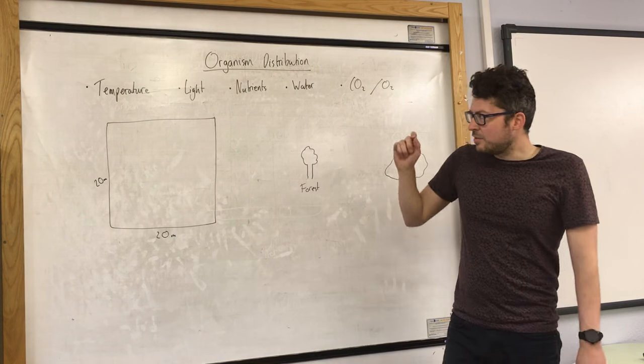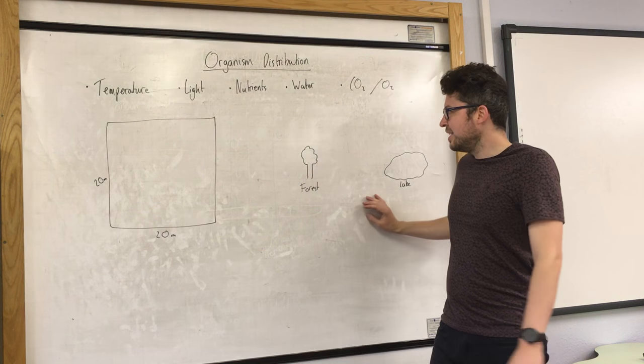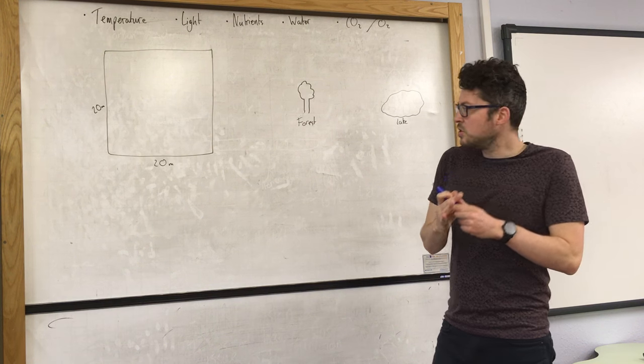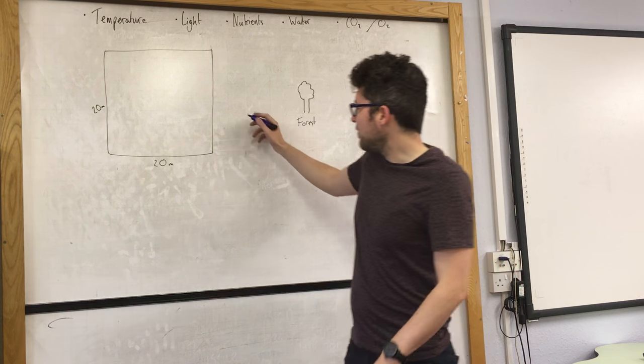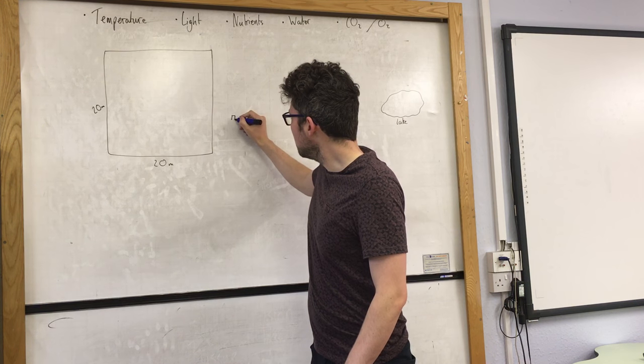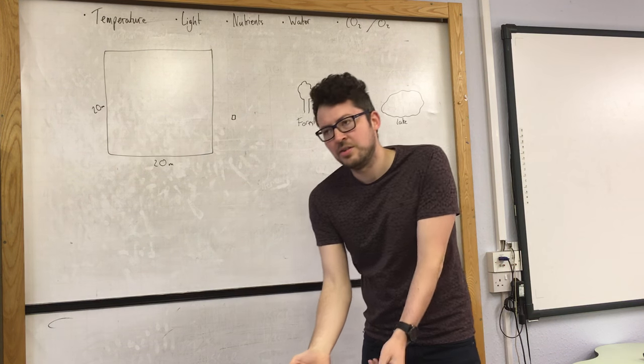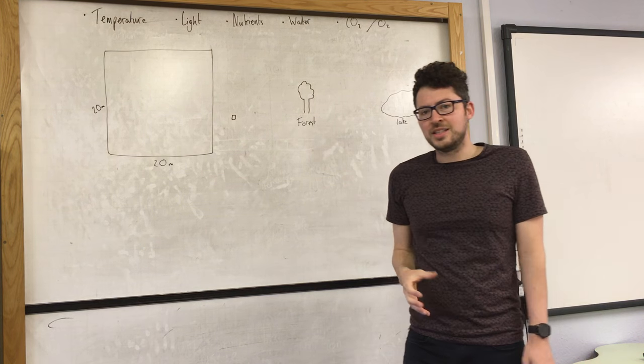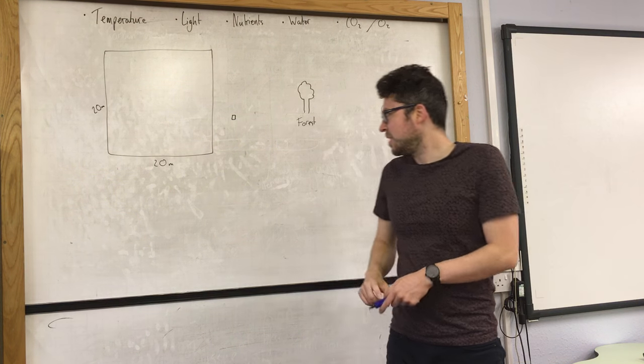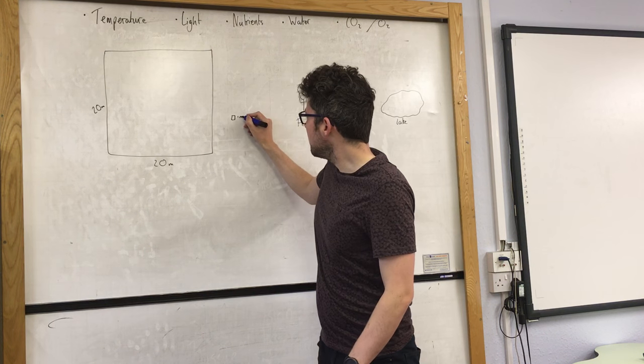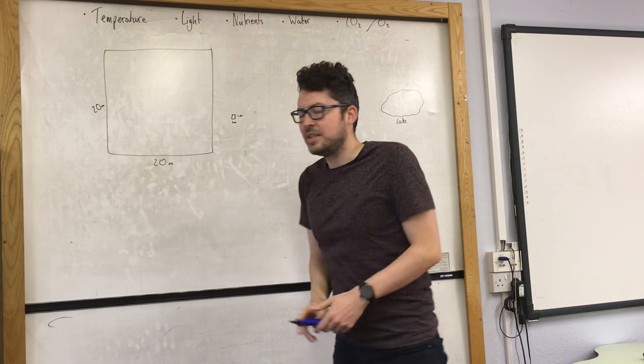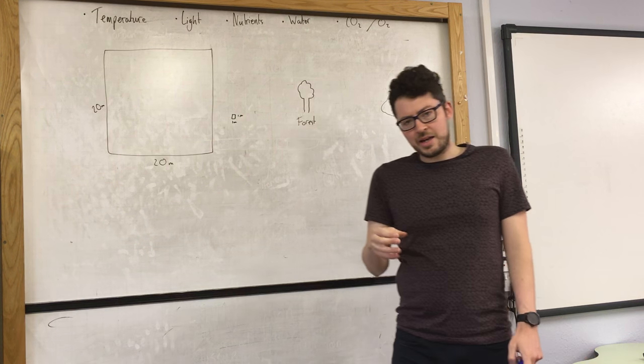That's simple. Now there are two methods of sampling that you need to know. And both of them use a quadrat. Now a quadrat is a small, either metal or plastic square that we can place down on the ground and then count organisms in that area. So let's imagine it's one metre by one metre. So it would be one metre squared.